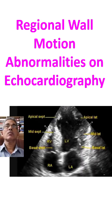And now we are into the apical four-chamber view. The segments you can see: this is right atrium, left atrium, right ventricle, left ventricle.